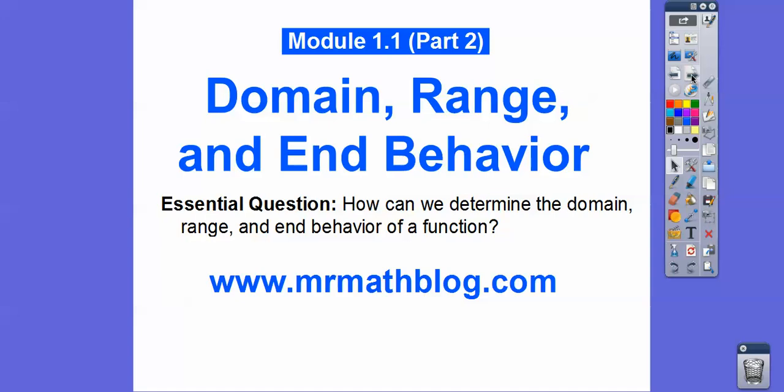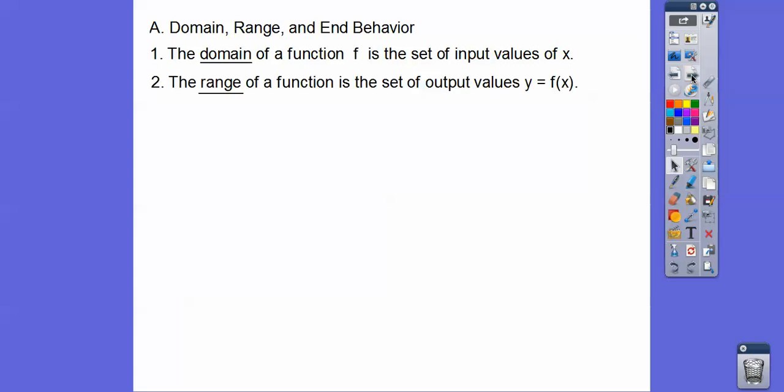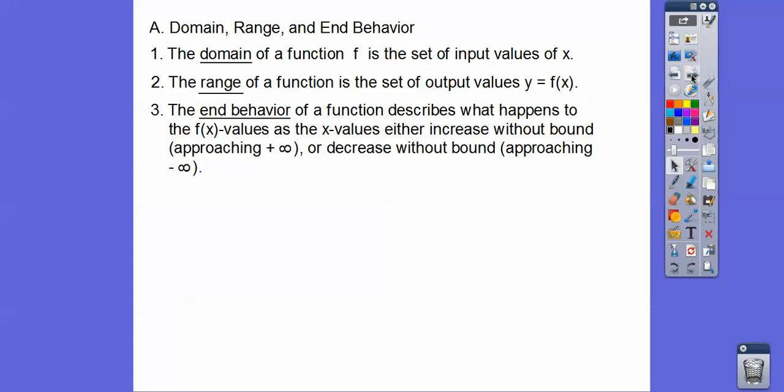So, how can we determine the domain, range, and end behavior of a function? It's a long lesson, so I'm going kind of fast. The domain of a function is all your input values — it's your x values. Your range is all the output values, it's the f(x) values, or your y values.